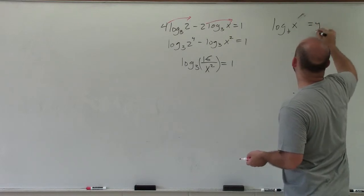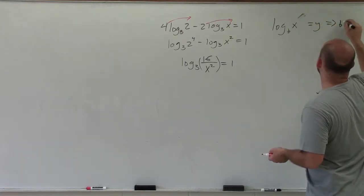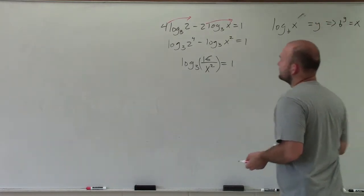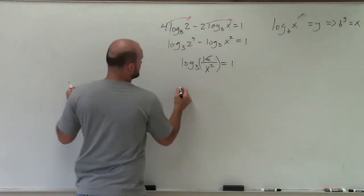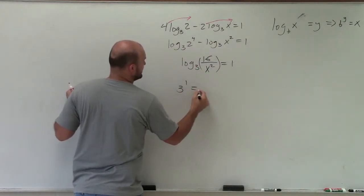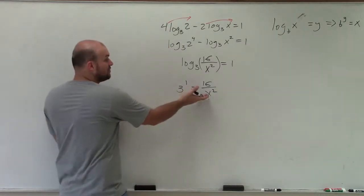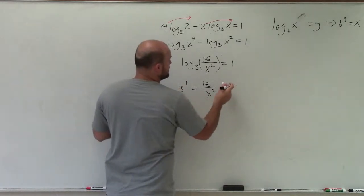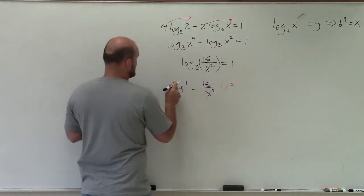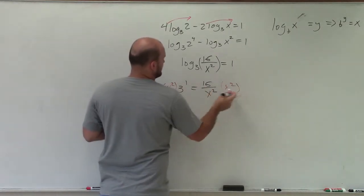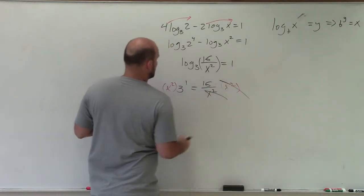It's simply b to the y equals x. So in this case, all I'm simply going to do is rewrite this as 3 to the 1 equals 16 over x squared. Now, to solve for x, I've got to get off the bottom, right? So I'll multiply by an x squared on both sides. Therefore,